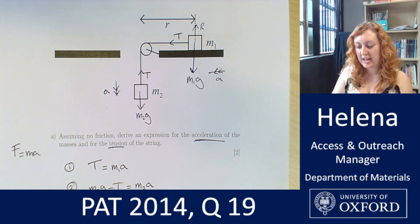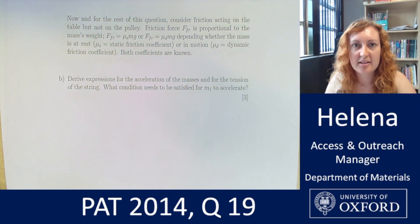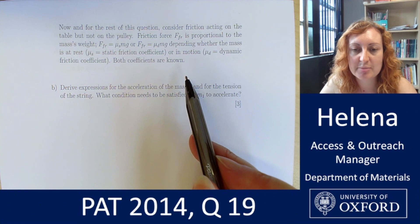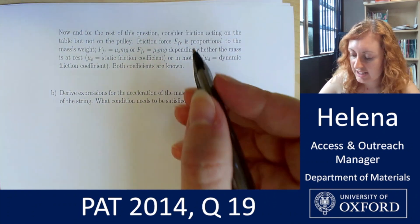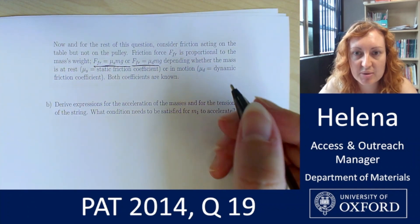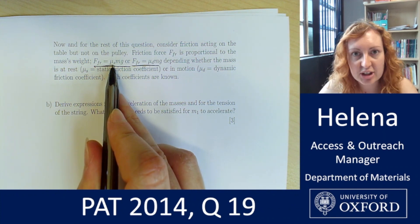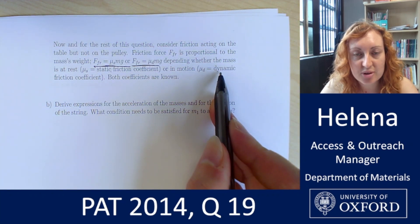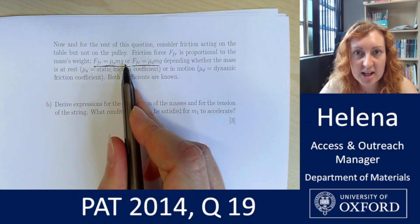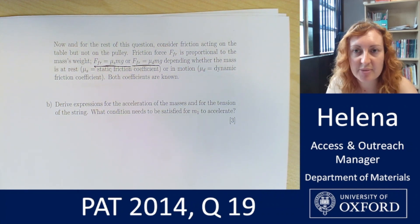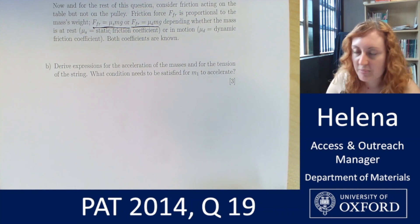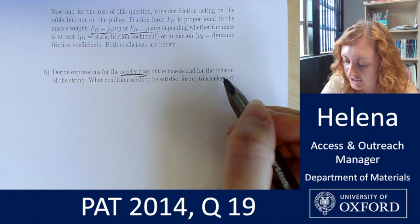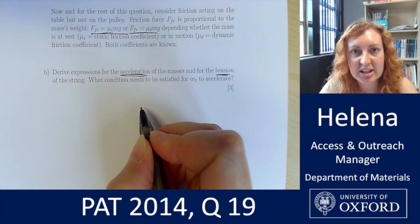Now let's look at part two. For the rest of this question we consider friction acting on the table but not on the pulley, so friction acts between block m1 and the table. We're told the frictional force FR equals the coefficient of friction — either static if the block is not moving, or dynamic if it is moving — times the mass times g. The coefficients are known and we keep them in the equations. We need to derive expressions for the acceleration and tension, and find a specific condition.